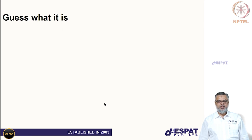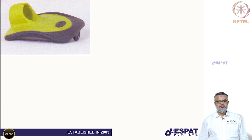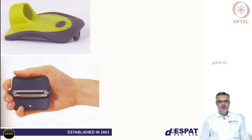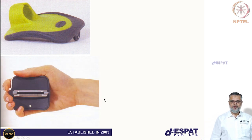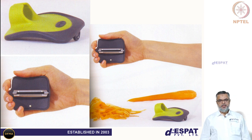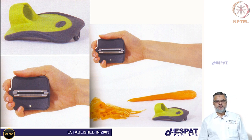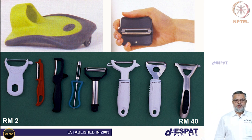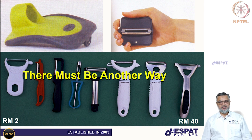Let's have a quick introduction to the concept of DFMA. If I were to ask you to guess what a particular object is and give you a few seconds to think through it, you might come up with different points of view. Given another perspective of the same product, you might figure out it is a peeler used to shave and peel vegetables. New product development is an ongoing process — there is always a quest to look for a better way of doing things.